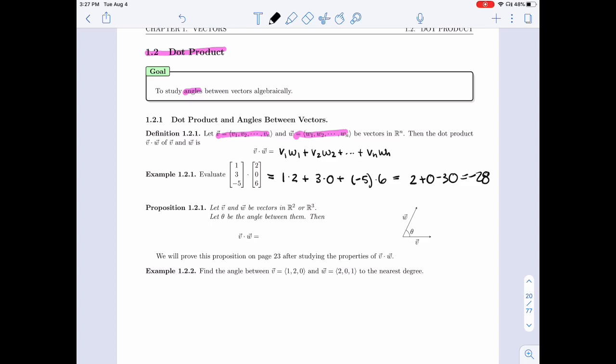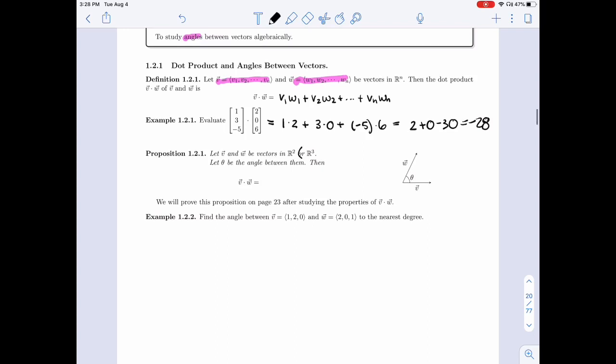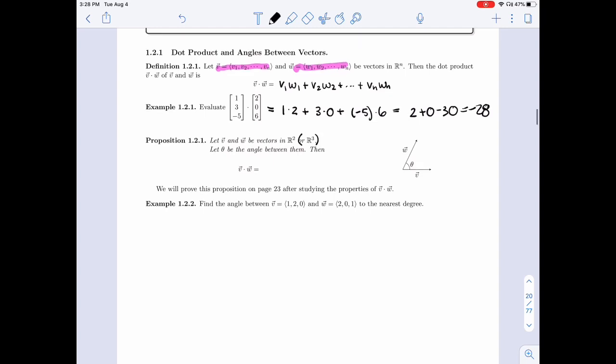This computation is super easy to make. It's not clear at this point that it's helpful at all. So let's keep going. This proposition will tell us exactly why we care about them. If I have two vectors, both in R2 or both in R3, the angle between them is theta, as in this picture. Then v dot w will be the length of v, the length of w,